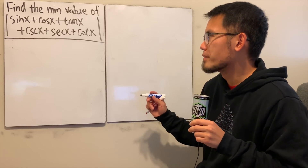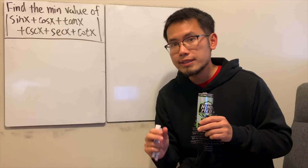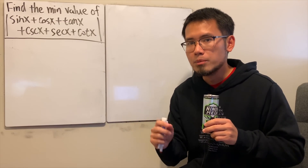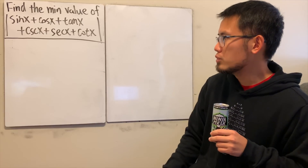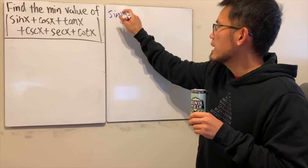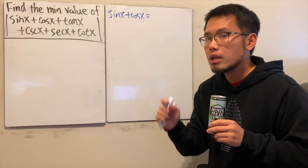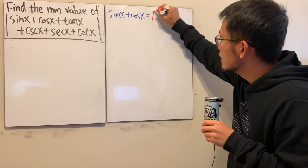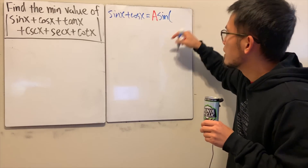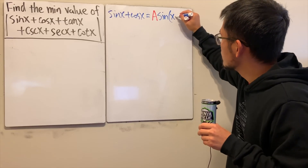All right, here we go. When we have sine x plus cosine x, we can actually combine them into just a sine function or a cosine function, using the harmonic addition theorem. I'd like to present the proof as well. So let's say sine x plus cosine x — if I want to combine them into just a sine function, I'll get a coefficient A times sine of x plus another angle phi.